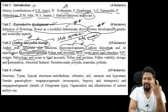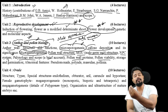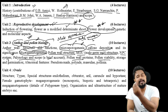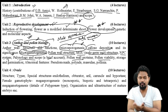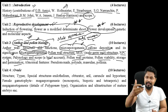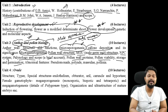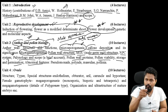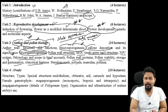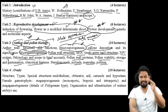Pollen wall proteins, pollen viability - how long pollen remains viable - pollen storage and germination. Abnormal pollen features such as polyads and massulae are also part of pollen biology. This is all discussed in Unit 3.